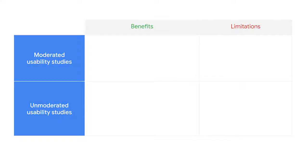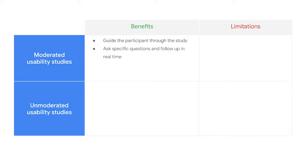Moderated and unmoderated usability studies have benefits and limitations depending on the scope and goals of your study. For moderated usability studies: the moderator guides the participant, which is beneficial because participants take the exact actions you want to get feedback about. Moderated studies allow the moderator to ask specific questions and follow up in real time to learn more, and can rephrase questions a participant isn't understanding — this allows you to collect more actionable information. Moderated studies also allow for rapport building between the moderator and participant, which can help the participant open up and share more feedback, especially important when the design deals with sensitive or personal issues.